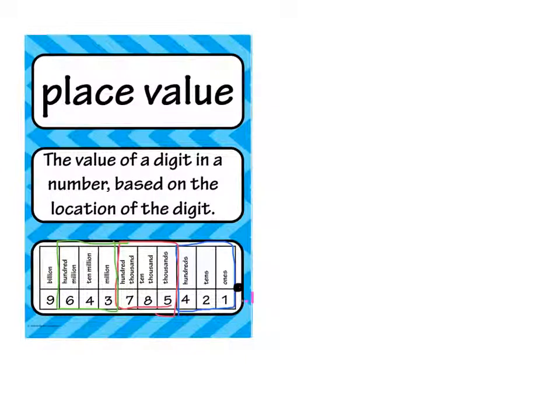Again, the tenths place, so it's decimal one, that's the same as one over ten. And after that, we would have the hundredths place, which is decimal zero one, and that is the same as one over 100.